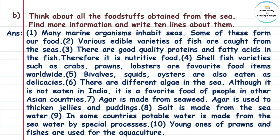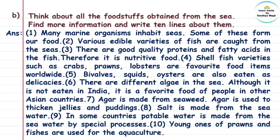Agar is made from seaweed — seaweed means small plants in the ocean. Agar is used for making jellies and puddings. Salt is made from sea water. In some countries, potable water — potable means pinayogya, meaning drinkable — is made from sea water by a special process. Young ones of prawns and fishes are used for aquaculture.